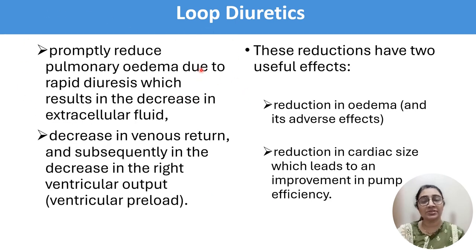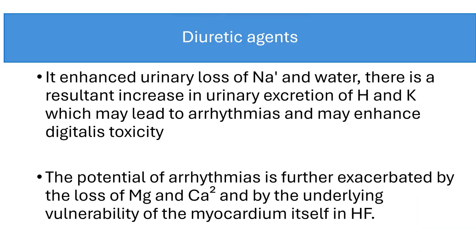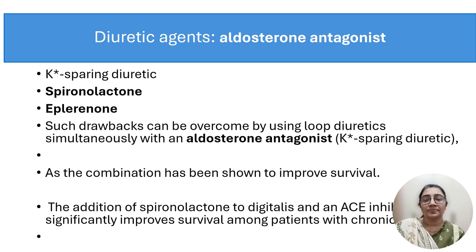Loop diuretics such as bumetanide and furosemide have two major effects: first, they promptly reduce pulmonary edema due to rapid diuresis resulting in a decrease in extracellular fluid; second, they decrease venous return and subsequently decrease right ventricular output. This reduction has two useful effects — reduction in edema and reduction in cardiac size, leading to improvement in pump efficacy. However, drawbacks include enhanced urinary loss of sodium and water, with risk of increased urinary excretion of hydrogen and potassium, which may lead to arrhythmia and enhanced digitalis toxicity. Arrhythmia can also occur due to loss of magnesium and calcium.